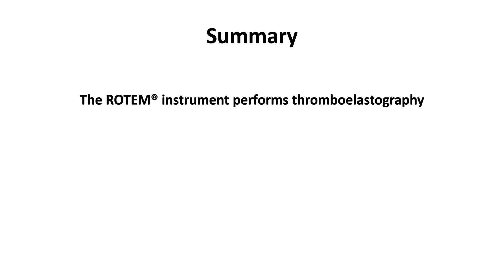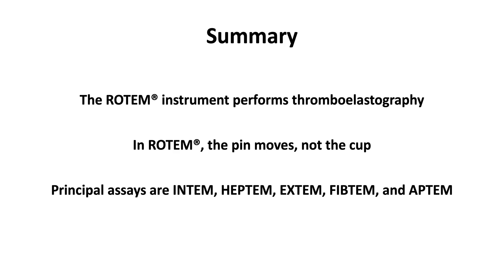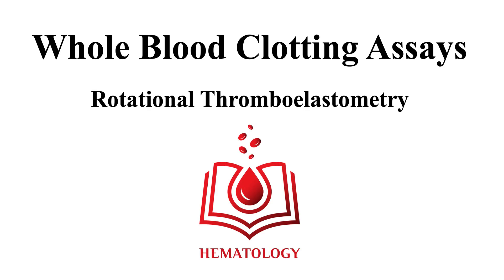In summary, the Rotem instrument performs thromboelastography. In Rotem, the pin moves, not the cup. The principal assays are Intem, Heptem, Extem, FibTem, and Aptem. This ends our video on whole blood clotting assays, rotational thromboelastometry.